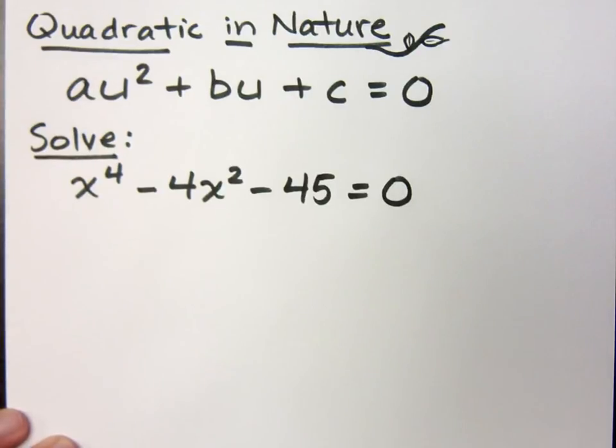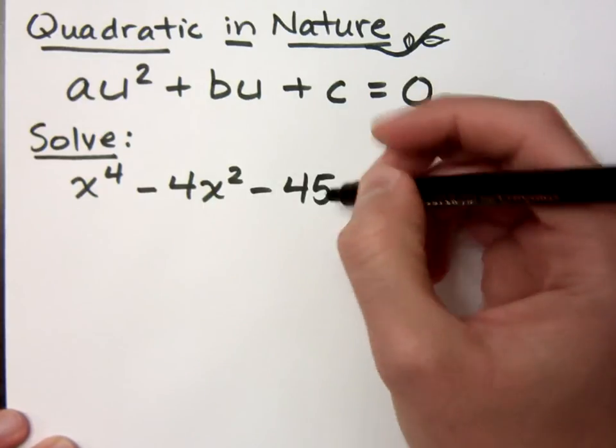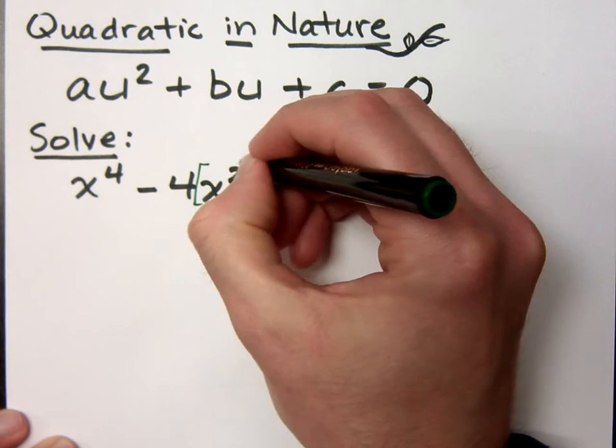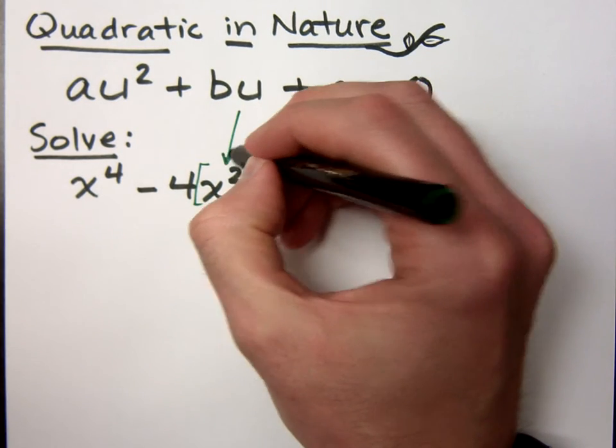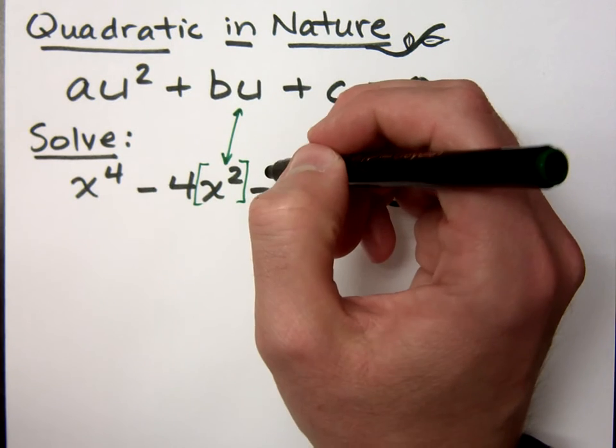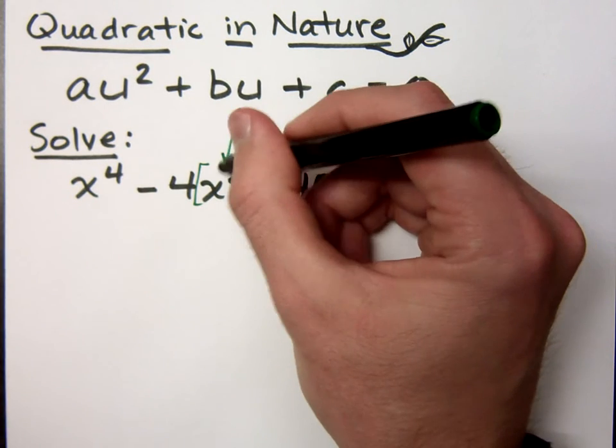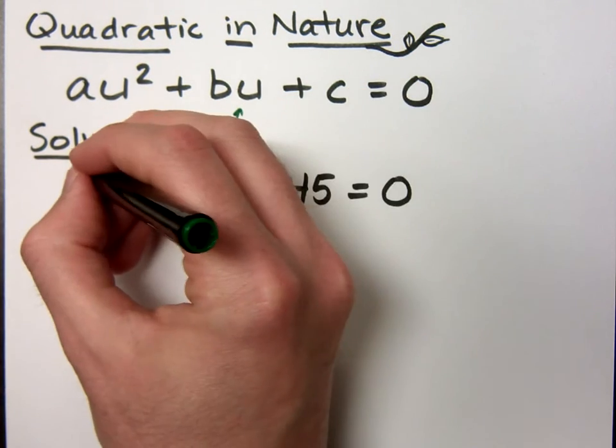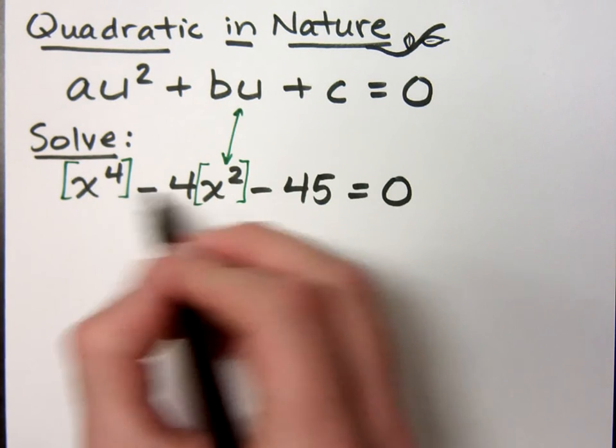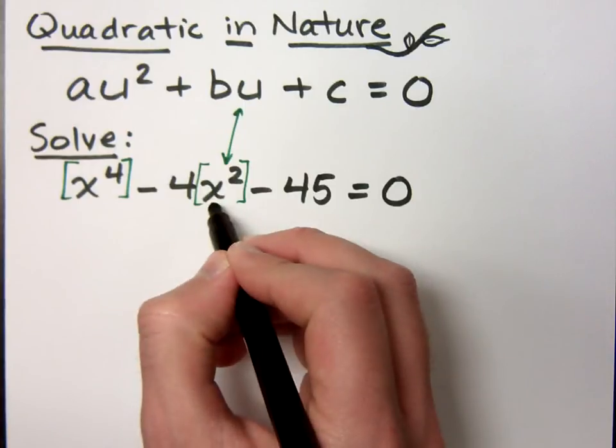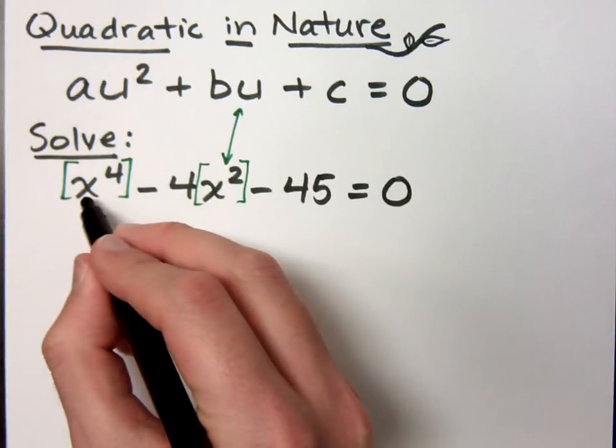And here's how you know something is quadratic in nature. You've got a constant here at the end, and this guy right here matches up with your u. But if this is to be quadratic in nature, then you need to have double his exponent here at the front. So if this guy is my u, u² then is x⁴.